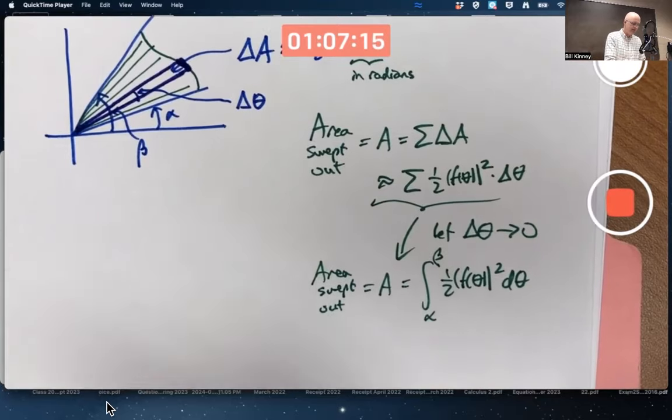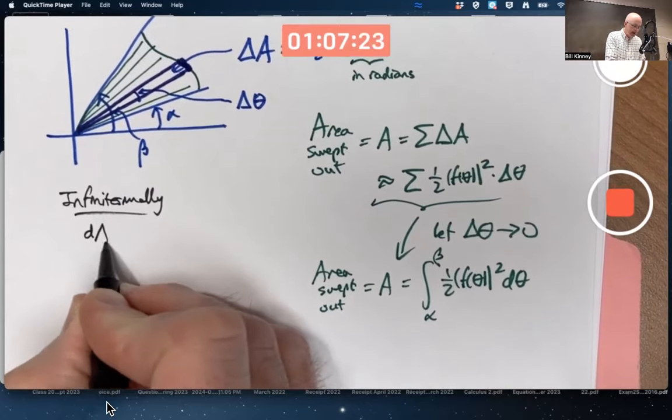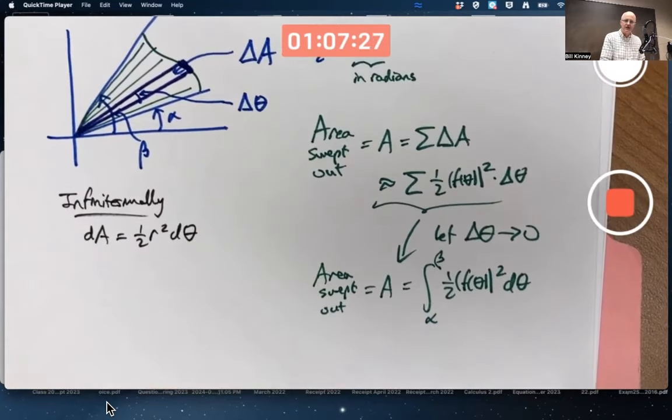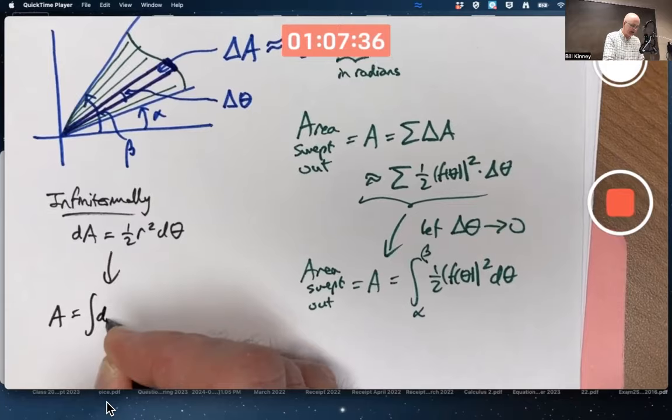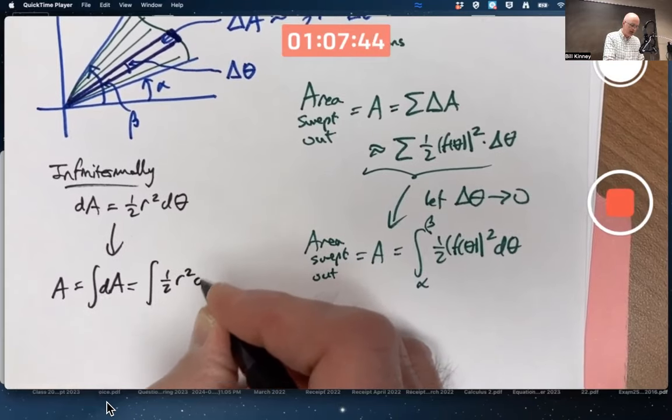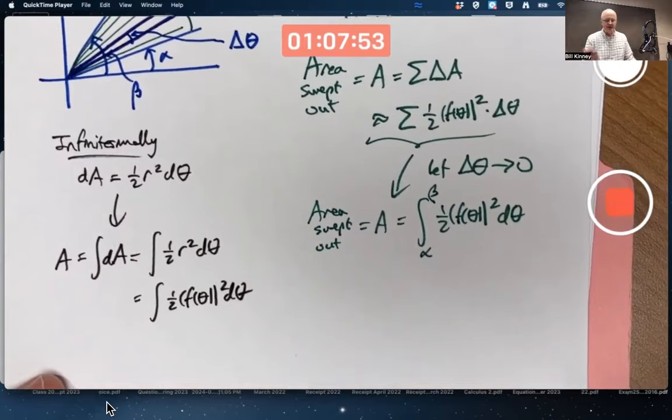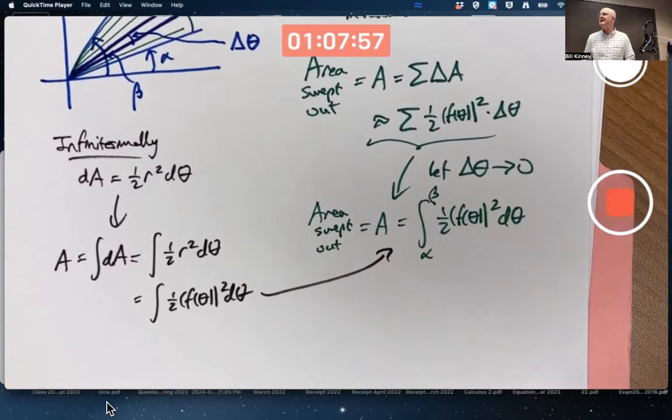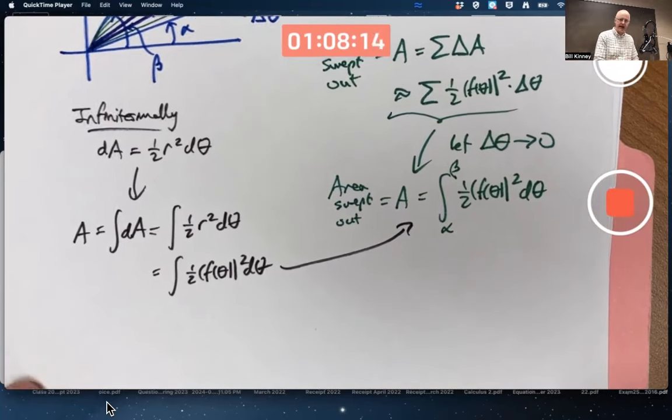We could use the infinitesimal approach as well. So infinitesimally, I'd write dA equals one half R squared d theta. Change the deltas to d's, change the approximately equal to an exactly equal to. Say to yourself, the total area is the sum of the infinitesimal areas, where you pretend the integral represents sum. Which would be one half the summation of these kinds of things, which would be the summation of these values because R is F of theta. And then you say, if I'm actually going to get an answer, I need to do a definite integral. Both approaches get you to the right integral. They're not rigorous, but we're okay with that. That's the kind of integral you do, which for our example is going to be relatively easy, actually.